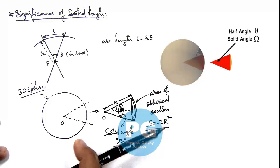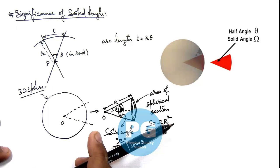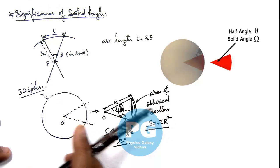That for this conical section, the top surface is spherical. And if its half angle is theta and the solid angle enclosed is omega, here you can see.